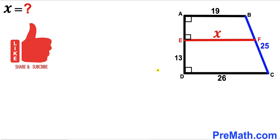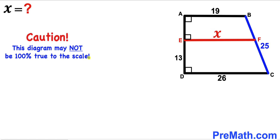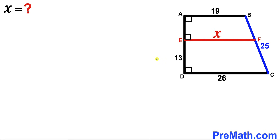Please don't forget to give a thumbs up and subscribe, and keep in mind that this figure may not be 100% true to scale. Let's make an observation: we can see that sides AB, segment EF, and base CD are all parallel to each other, since all of them make a 90-degree angle.